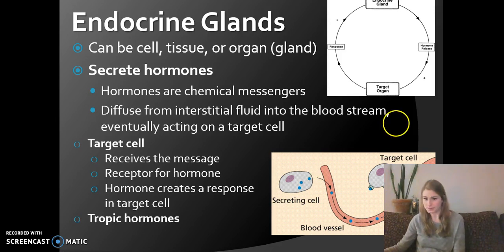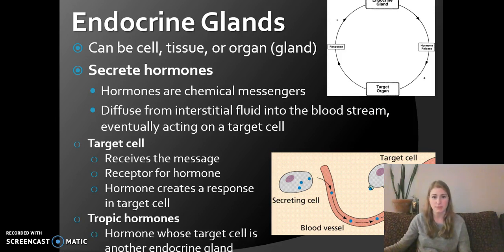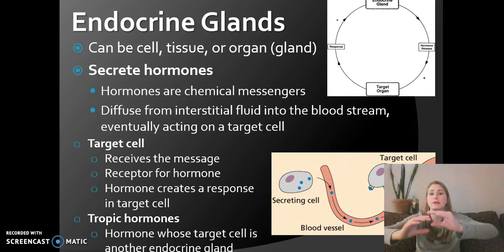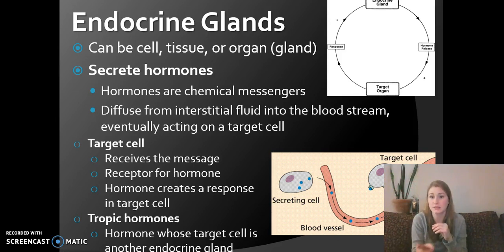Tropic hormones: when we talked about the anterior pituitary, there are those four tropic hormones. What you need to know — and you will see these on your test — is that these are hormones whose target cell is another endocrine gland. So when we talk about the hypothalamus giving instructions, the anterior pituitary passing them along, and then the thyroid receiving them, all of those hormones that tell another gland to secrete are called tropic hormones.